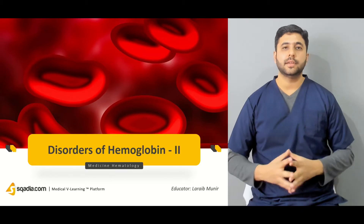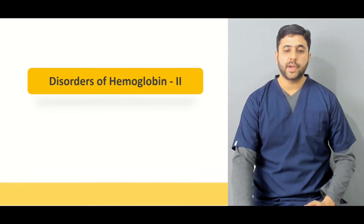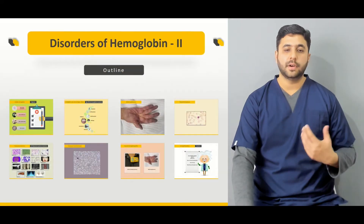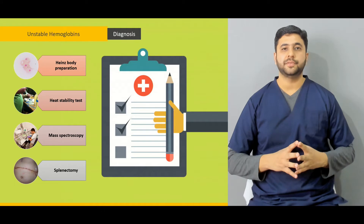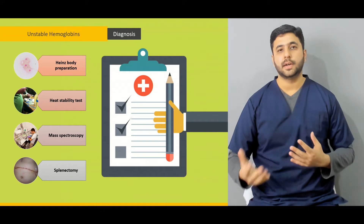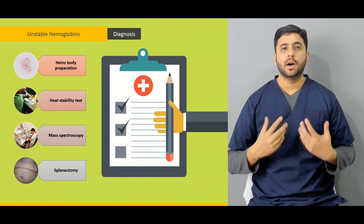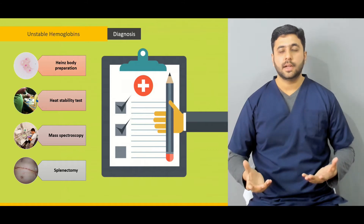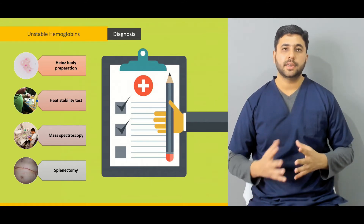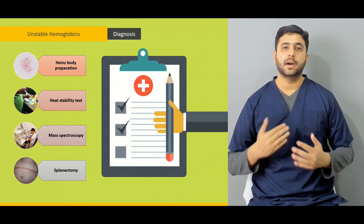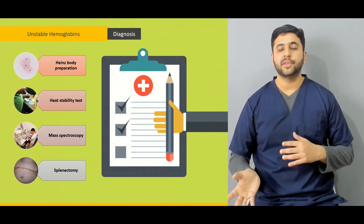This lecture is going to be a continuation of that lecture. We are going to start off from where we left initially, beginning the discussion with unstable hemoglobins or the various variants of hemoglobins. How do these unstable hemoglobins form? What is the underlying pathology? And what are the various types of these unstable hemoglobins and the various variations?